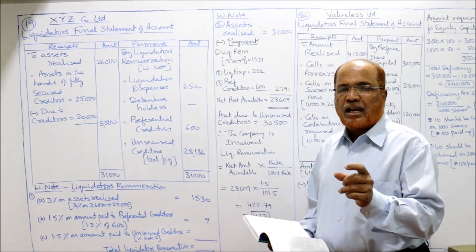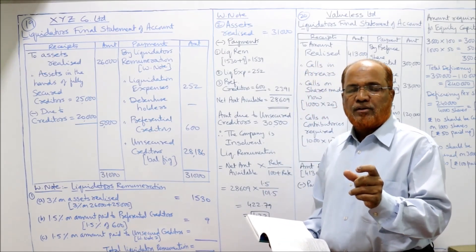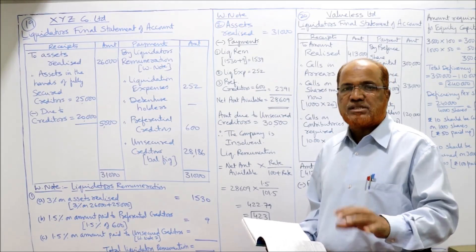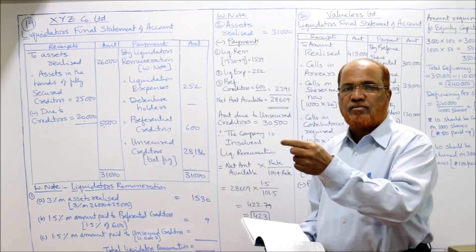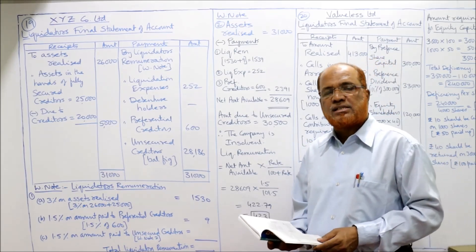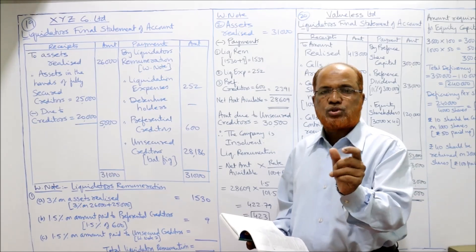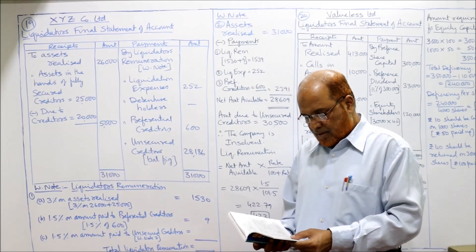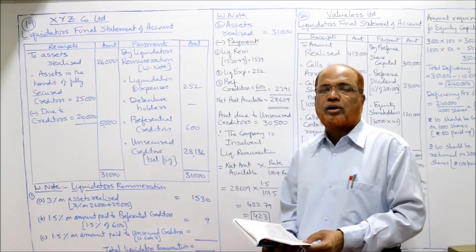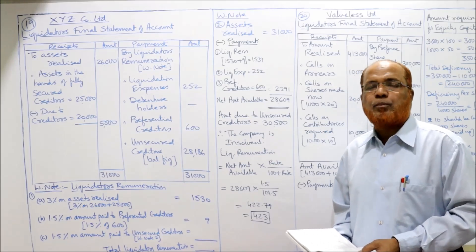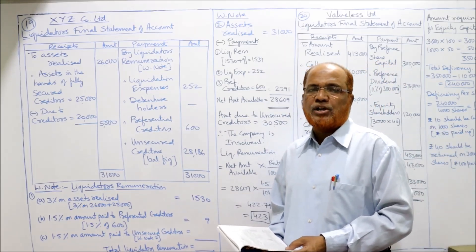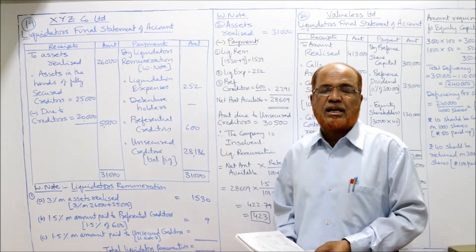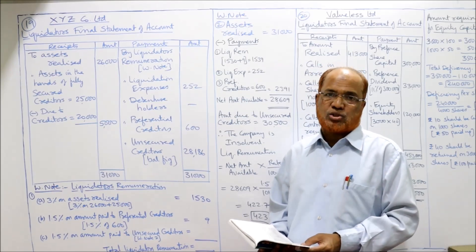So while calculating liquidator's remuneration, we calculate 3% on all assets — both assets realized by the liquidator himself and assets realized by fully secured creditors combined. Additionally, 1.5% on the amount distributed to unsecured creditors. Remember that unsecured creditors must include preferential creditors also for this calculation.